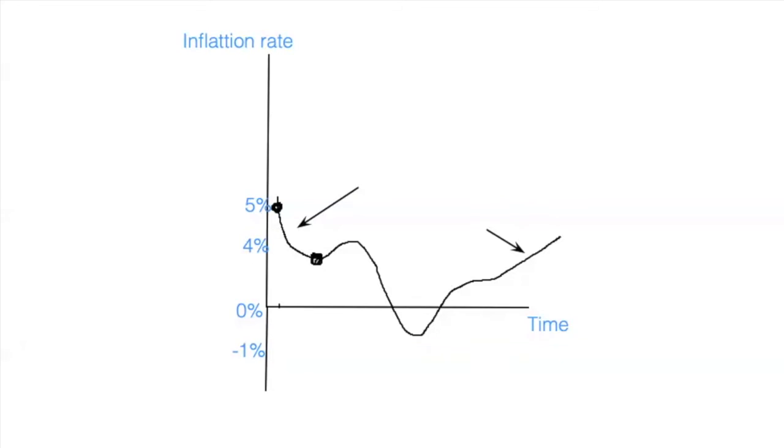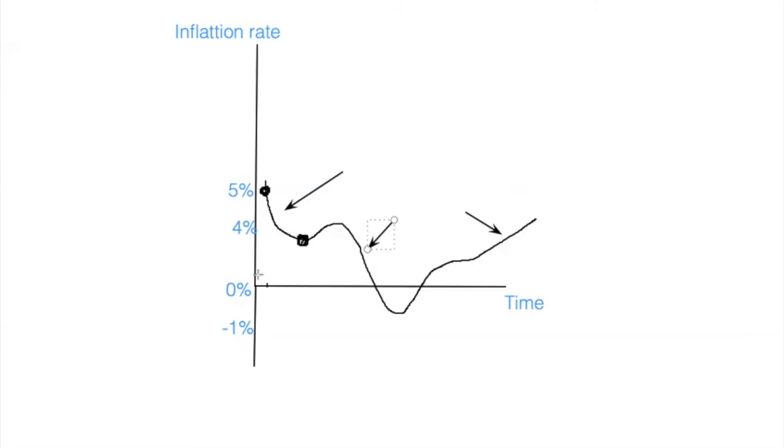And it's also disinflation. It's also disinflation right here. Because again, we're still on the positive side of zero, right? Prices are still going up until we get to this part. And then for whatever this part is, between whatever month or year this is, and whatever month or year this is, we actually had a negative inflation rate.